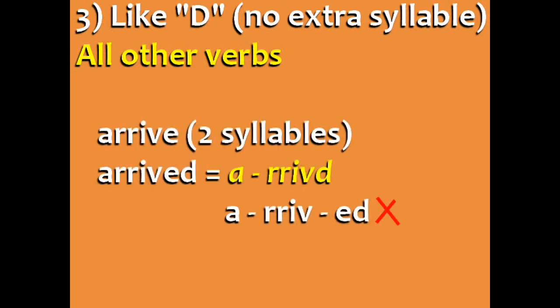So, the past tense of the verb ARRIVE, which has two syllables, is ARRIVED, which also has two syllables. Don't say ARRIVED. It's incorrect.